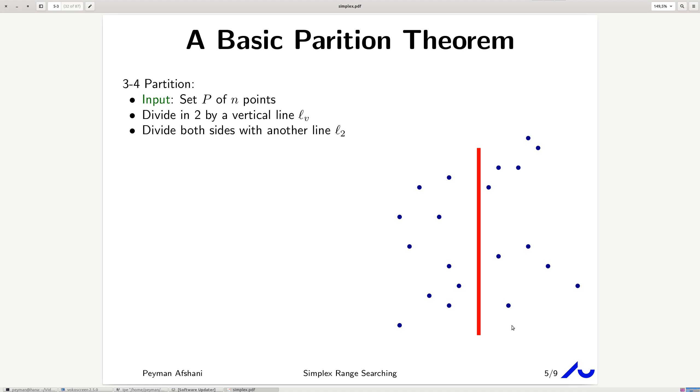It turns out that you can even do something cool now, and that is you can find another line that divides the left half, the left side in half, and the right side in half. So, something like this. So, now there's 5 points here, 5 points here, 5 points here, and 5 points here. So, every quadrant has 5 points in them. You can always do this.